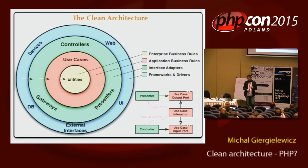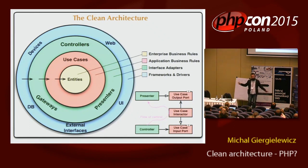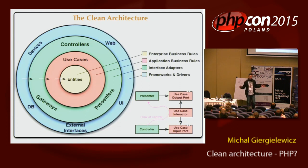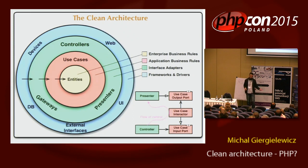There is a layer of gateways, controllers — interfaces that connect your outside world with your internal application. And of course, the most external layer is a layer with the framework, database implementation, API calls, UI, whatever. This is the less important part. Your core is entities and use cases. And I will try to explain why this is important and why the other part is not so important.